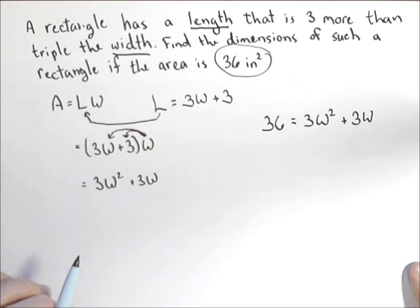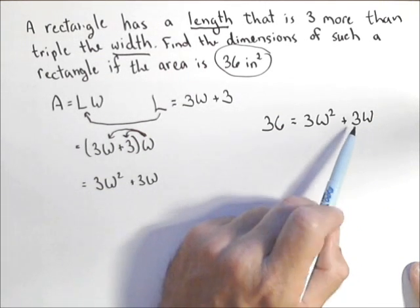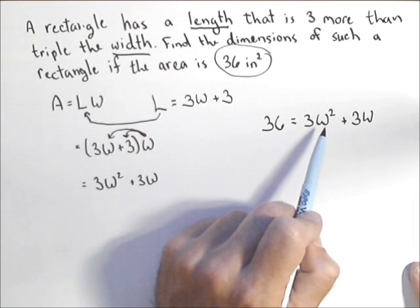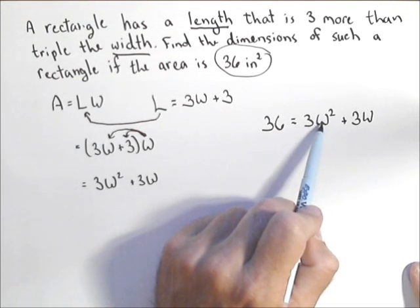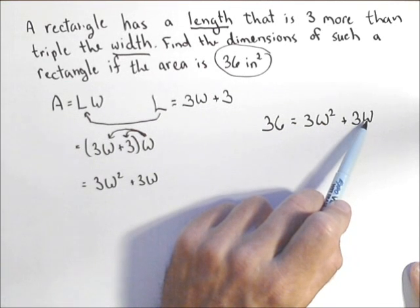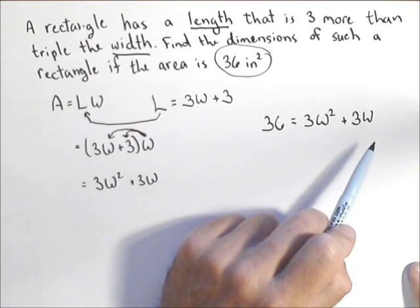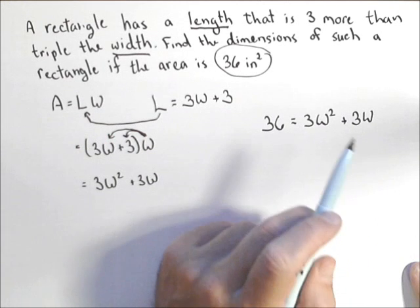And now some common things that I see at this point. People sometimes try to subtract the three W and take the square root. We can't do that. Anytime you got a W squared term and a W term, what we're going to need to do is get a quadratic equal to zero and then either factor or use the quadratic formula or use our graphing calculator.